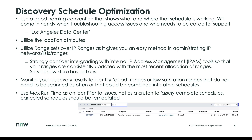Secondly, utilize the location attribute. That location attribute in discovery schedules is really handy to the business because it helps tag those CIs with where they are. Understanding your IP range allocations — that all these computers are in the Dublin data center — lets you track your inventory wherever it is around the world.